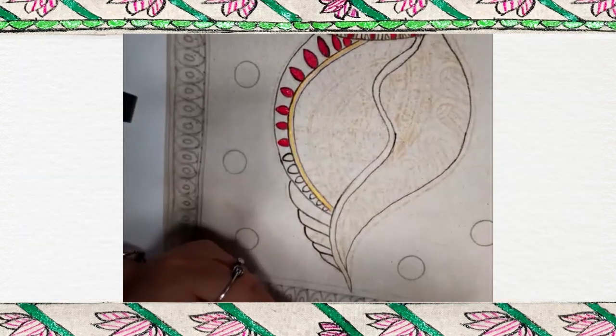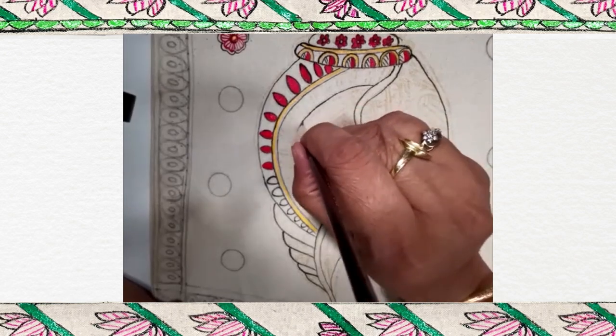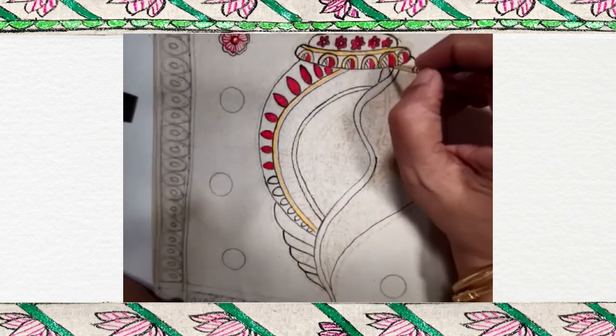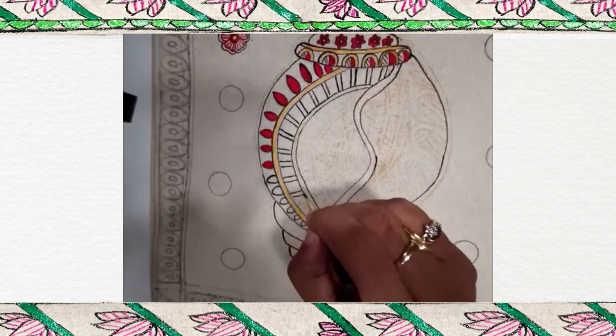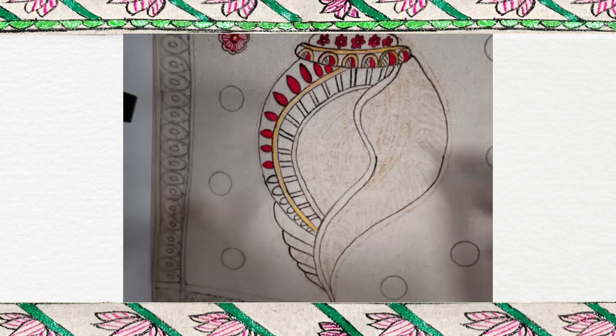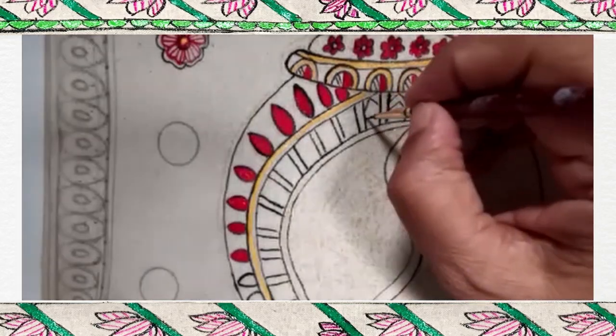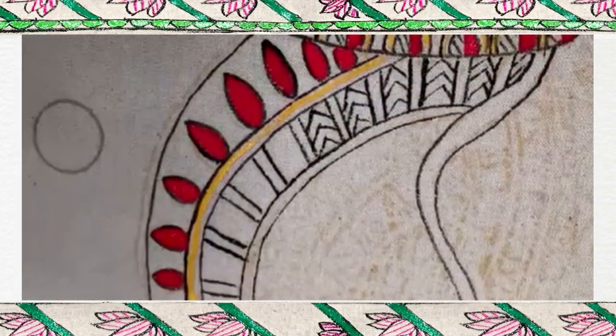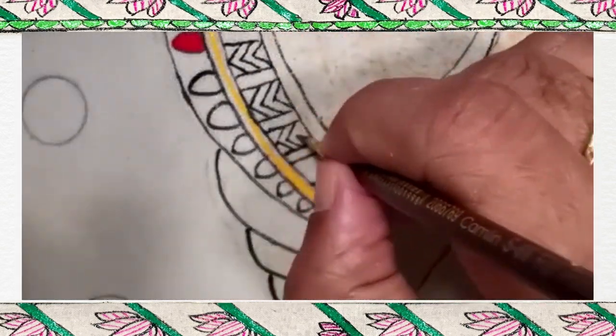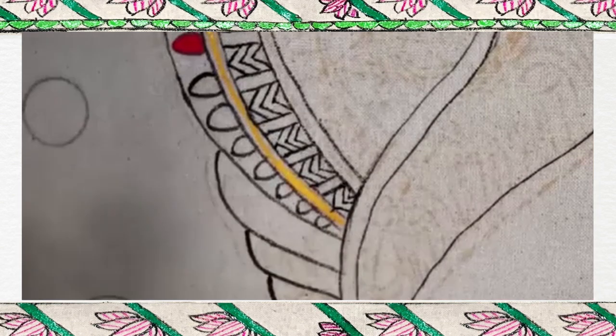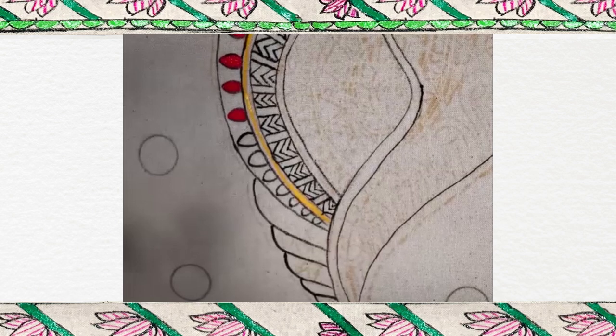So, all these will go like this. We will come to next one. Now, here we are doing some kachni. I am keeping 3 brushes for 3 shades. That is easy and fast.